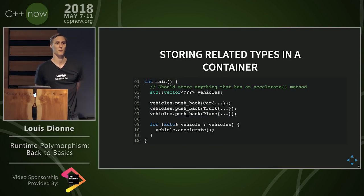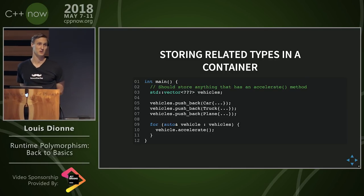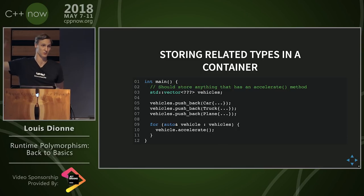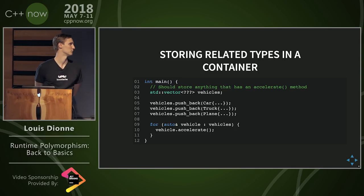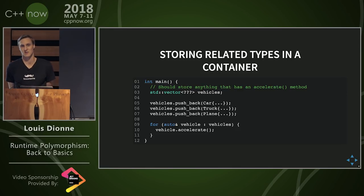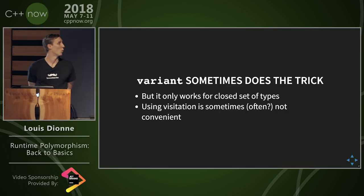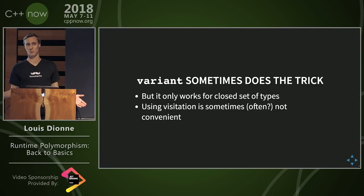Another very similar place where you need to do that is when you want to store related types in a container. You need to settle on a single fixed representation that can represent all the actual dynamic types you want to put in the container. Obviously, you cannot have a car, truck, and a plane in a vector as-is, because a vector just holds objects of a single type. And sometimes variant is enough — if you know the set of types you have, you can use variant.